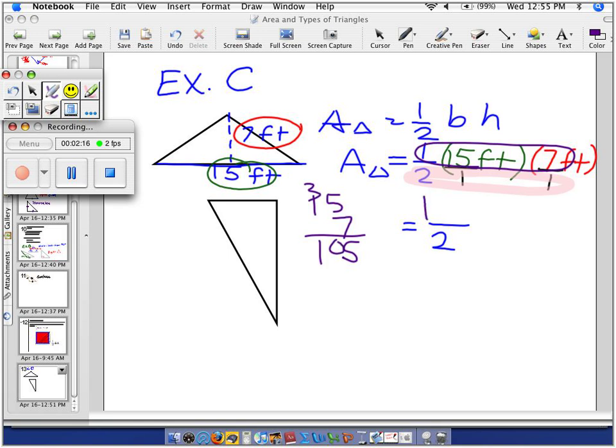So 105 over 2. But wait! Mr. Kim, what about the feet? You're multiplying feet times feet. So I will say then, foot times foot is feet squared.